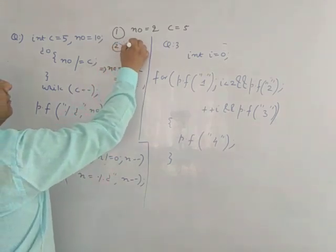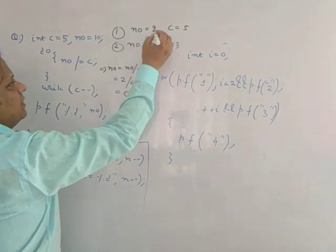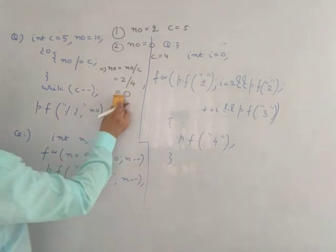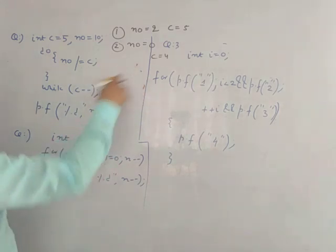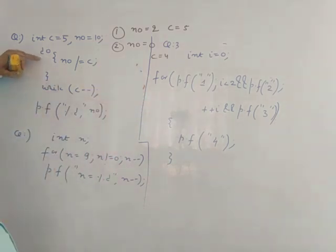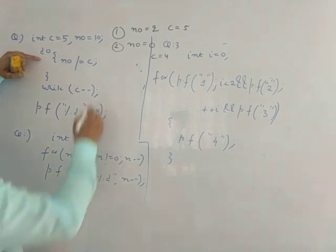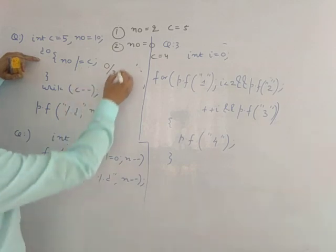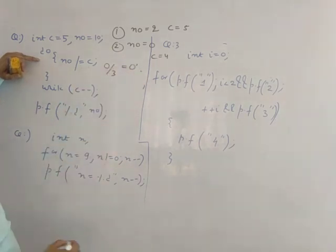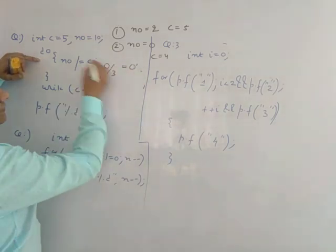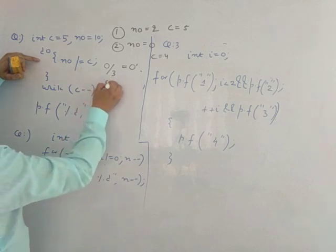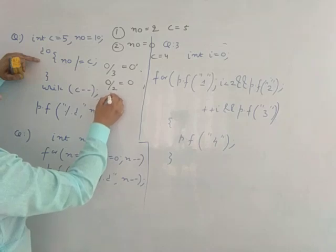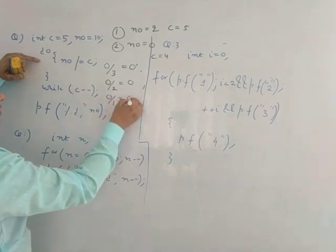The second time the value of num is 0 when c is 4. Again the loop runs, the value of c is now 3 and num is 0, so 0 divided by 3 is 0. Again the value of c becomes 2, so 0 divided by 2 is 0. Again the loop runs, c is 1, so 0 divided by 1 is 0.